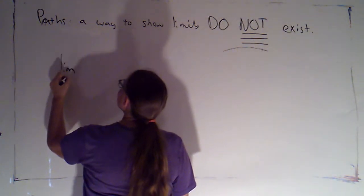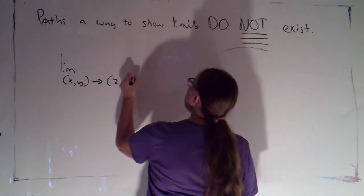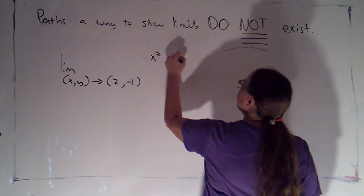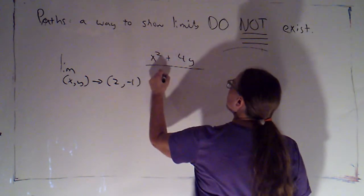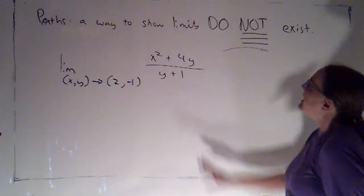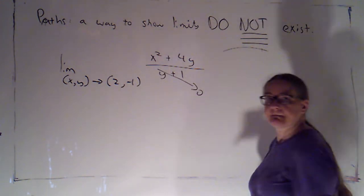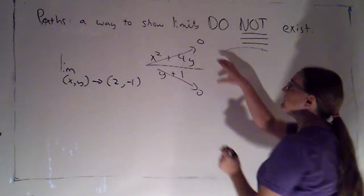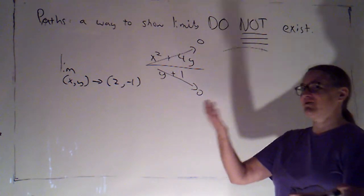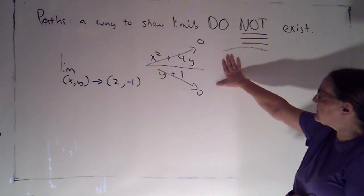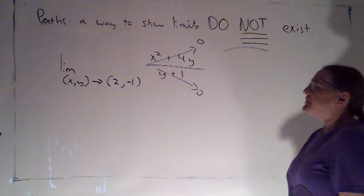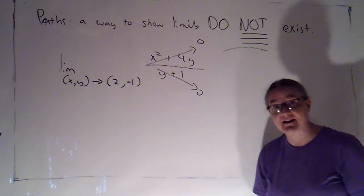Let's try one. Let's take a look at the limit as (x,y) approaches (2, -1) of (x² + 4y) / (y + 1). Notice we are approaching a point other than the origin here. If I tried to plug in, the denominator goes to zero and the numerator goes to zero — so we have an indeterminate form. I'm going to look to see if one of the techniques that work for both showing a limit exists or doesn't exist would work. Is there a substitution I could make? No. And we're not approaching the origin, so I can't switch to polar. So by process of elimination, I am going to hope that this limit doesn't exist and try paths.